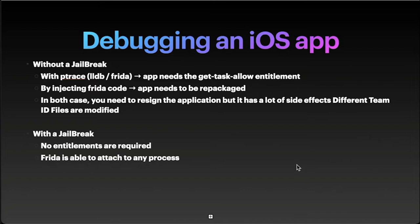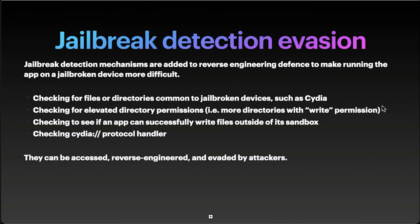With a jailbreak, no entitlements are required and Frida is able to attach to any process. But how do you avoid it? Jailbreak detection evasion mechanisms are added to reverse engineering defenses to make running the app on a jailbroken device more difficult. Like most other types of defense, jailbreak detection is not very effective by itself, but scattering checks throughout the app's code can improve the effectiveness of the overall anti-tampering mechanism.